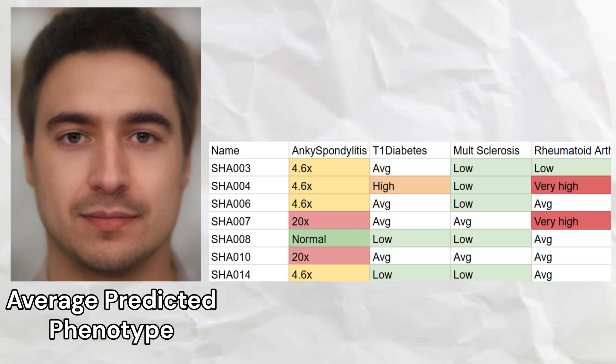The Shah Tepe samples had lower odds of autoimmune disease on the basis of HLA genotypes. Despite that, they had high odds for certain autoimmune conditions like ankylosing spondylitis. One of the Shah Tepe samples had high odds of type 1 diabetes. None of the Shah Tepe samples carried HLA-DRB1 risk variants for multiple sclerosis, and two of the Shah Tepe samples scored very high for rheumatoid arthritis risk.